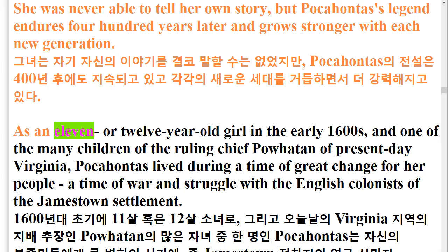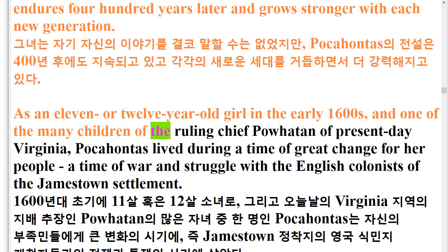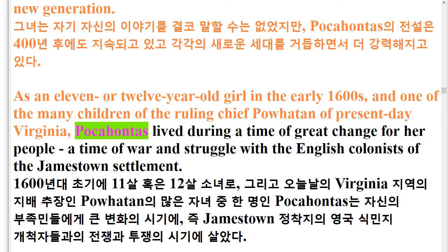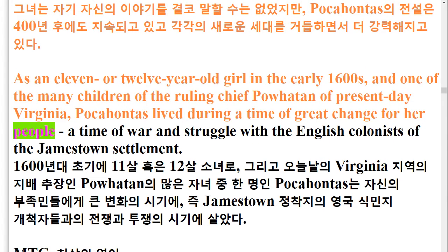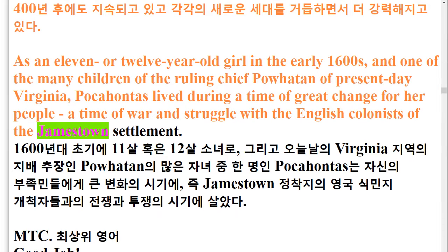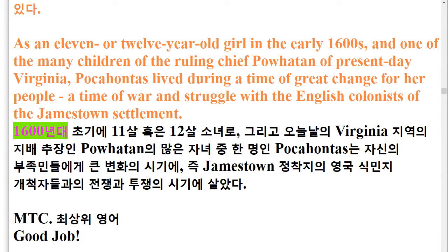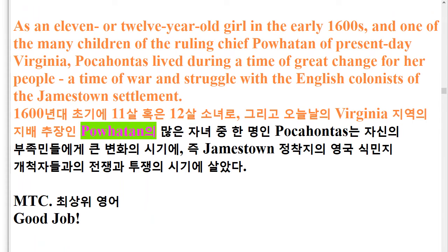As an 11 or 12-year-old girl in the early 1600s, and one of the many children of the ruling chief Powhatan of present-day Virginia, Pocahontas lived during a time of great change for her people, a time of war and struggle with the English colonists of the Jamestown settlement.